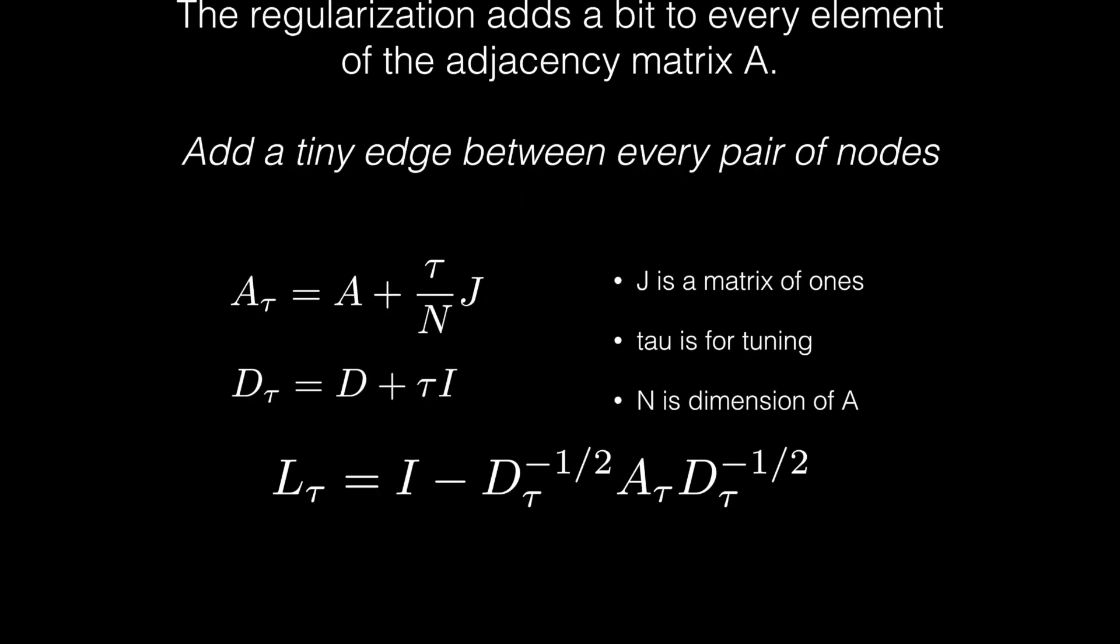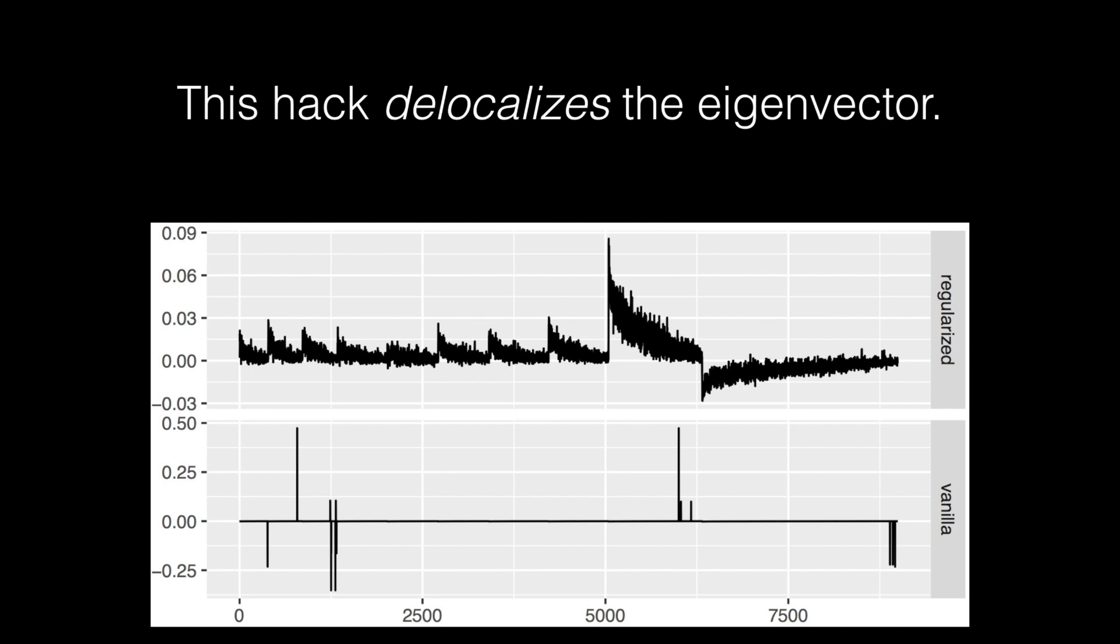Regularization can solve this problem. Regularization adds a tiny edge between every pair of nodes on the network. Regularization delocalizes the eigenvectors. And in this way, we can find communities with more nodes which are more balanced and more interesting for us.